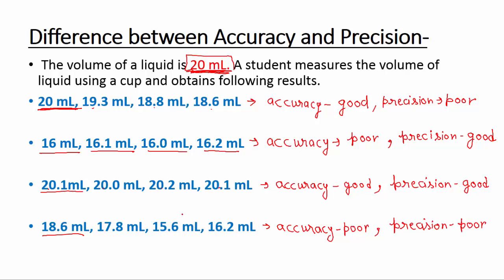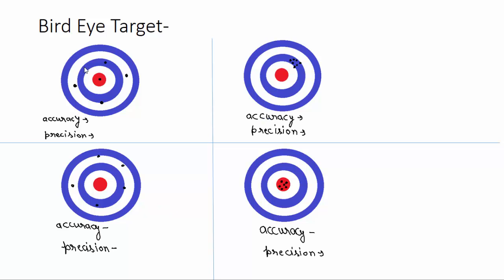Let's take a bird's eye target example. The red circle shows the actual value and the black dots show measured values. In the first set, accuracy is good because one dot is inside the red target, but all dots are very far from each other, so precision is very poor. In the second set, no dot is inside the red circle, so accuracy is poor, but all results are very close to each other, so precision is good.